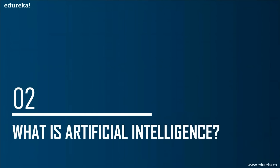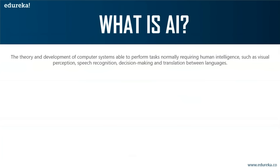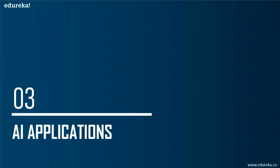The term artificial intelligence was first coined in 1956 by John McCarthy at the Dartmouth Conference. He defined AI as 'the science and engineering of making intelligent machines.' In other words, artificial intelligence is the theory and development of computer systems able to perform tasks that normally require human intelligence, such as visual perception, speech recognition, decision making, and translation between languages. In a sense, AI is a technique of getting machines to work and behave like humans, and it has been used in a wide range of fields including healthcare, robotics, marketing, and business analytics.